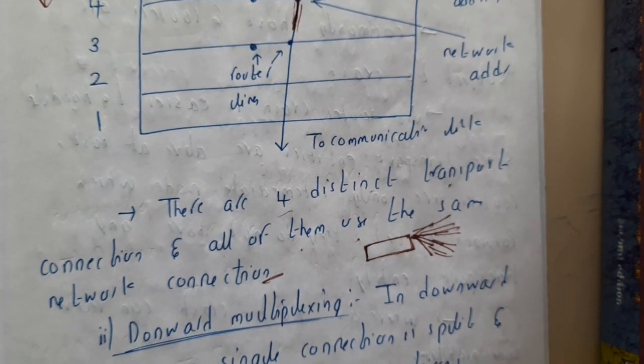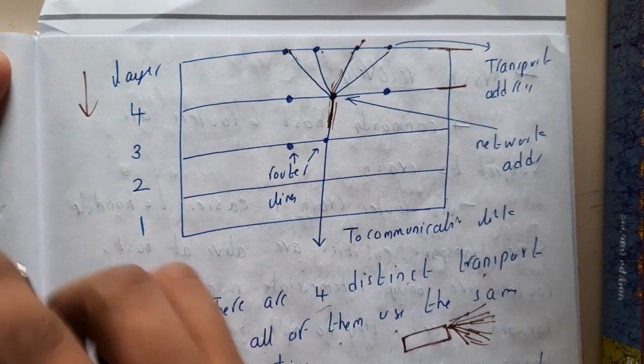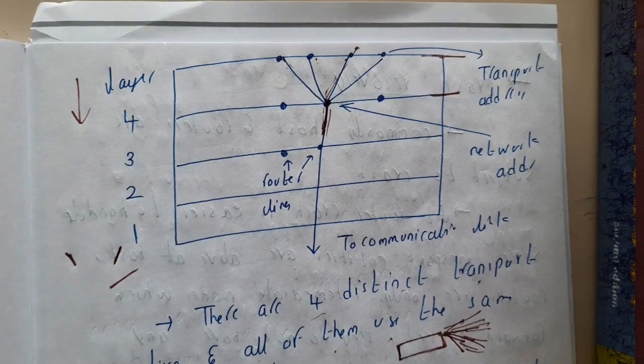Basically the upward multiplexing is used on the sender side and the downward multiplexing is used on the receiver side. That's the logic, that is the reason why we are discussing both of them.